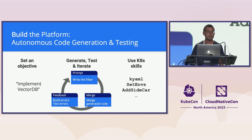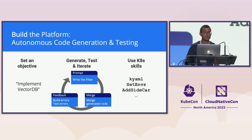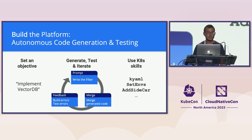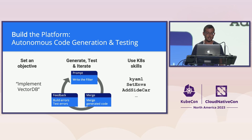Here's how we build the platform using autonomous code generation and testing. It's an iterative process where we prompt the model to implement the controller. We then try to build and test the code, collect those errors, and feed them back to the model, asking it to fix those errors. We then merge that existing code and repeat the process. By doing this iteratively, we can produce functional code.